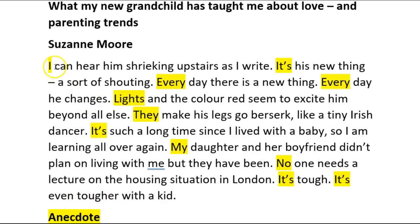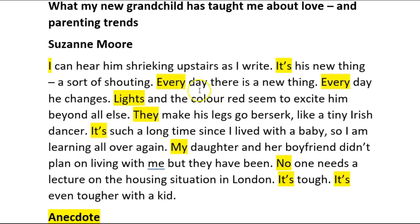So I'm going to read you the beginning of a new article — a new opinion piece by Suzanne Moore, again from The Guardian. She's writing about the role of a grandparent. 'I can hear him shrieking upstairs as I write. It's his new thing. A sort of shouting. Every day there is a new thing. Every day he changes. Lights and the colour red seem to excite him beyond all else. They make his legs go berserk like a tiny Irish dancer.' So you can see how she begins directly with an anecdote again. You will also notice that not every sentence starts in a different way, but here the repetition is deliberate — 'every, every', 'it's, it's, it's' — she's drumming home a point. So this doesn't happen by accident.